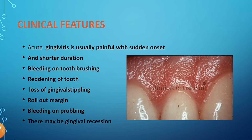Now let's look at the clinical features of gingivitis. Acute gingivitis is usually painful with a sudden onset, lasts for a short duration, and there is bleeding on tooth brushing — because the gums are inflamed and swollen, so when you brush there is a high chance of bleeding. There is also reddening of the gingiva near the tooth compared to other areas.